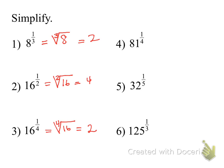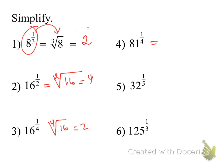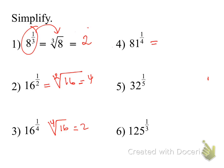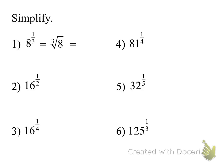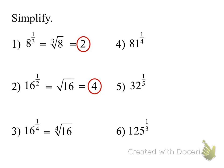I want you to put it on pause and do problems four through six. The question is now: what times itself four times equals 81? Somebody suggested four — if I do four times itself four times, that equals 16 times 16, which is 256. That doesn't work. Let's try three: three times three times three times three. Three times three is nine, and nine times nine is 81. Yes! So the fourth root of 81 is three.